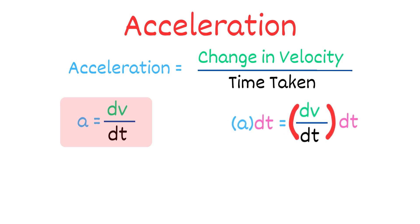Also, if we multiply dt on both sides, we get the integral of a dt equals dv. Therefore, by integrating acceleration with respect to time, we get the change in velocity.